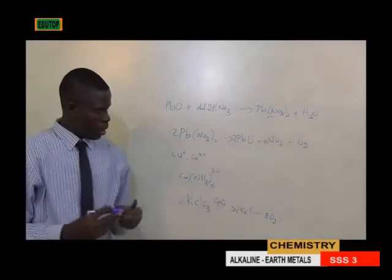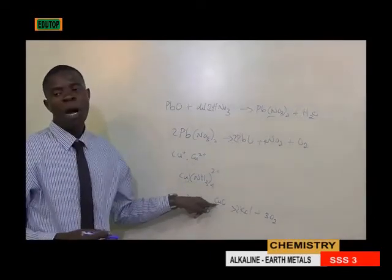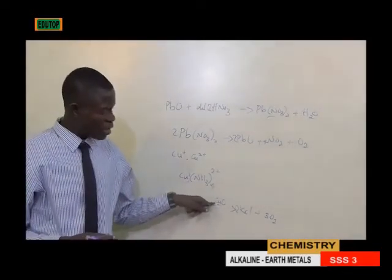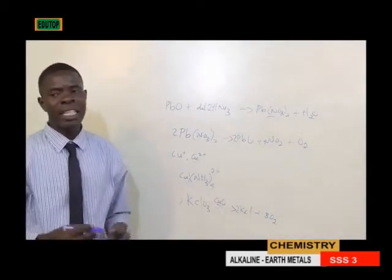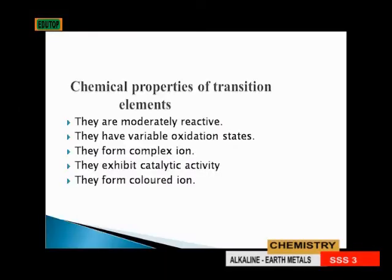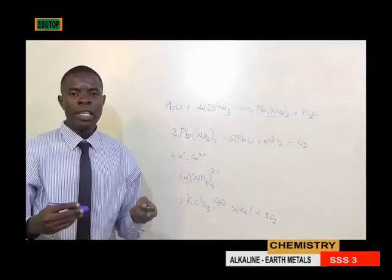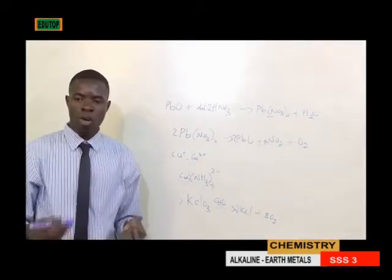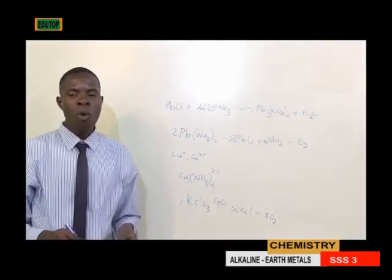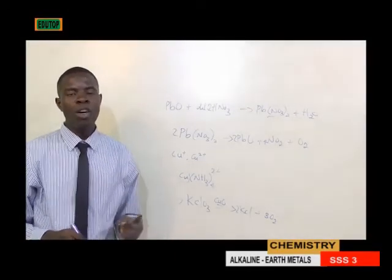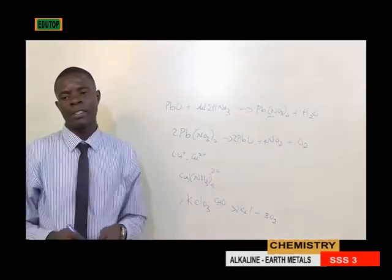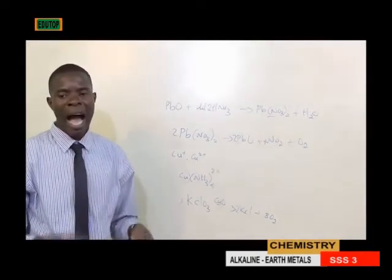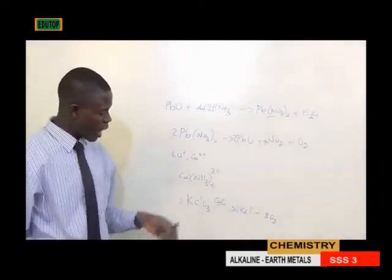This is a compound of copper, which is a transition element acting as a catalyst. That is why it is said they exhibit catalytic activity. They form colored ions. Most of the transition metals are colored in nature, except in cases where the orbital is fully filled or is vacant. Every other one has a different color, just like copper.